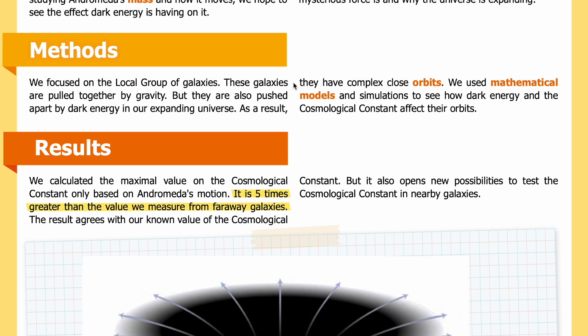Methods. We focused on the local group of galaxies. These galaxies are pulled together by gravity, but they are also pushed apart by dark energy in our expanding universe. As a result, they have complex close orbits. We used mathematical models and simulations to see how dark energy and the cosmological constant affect their orbits.